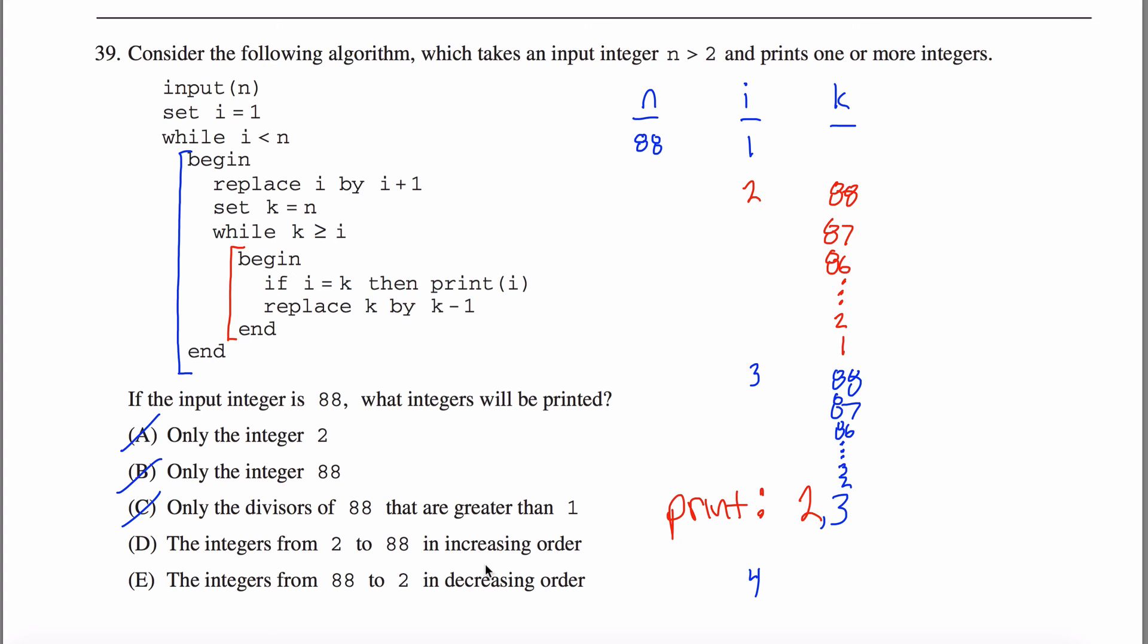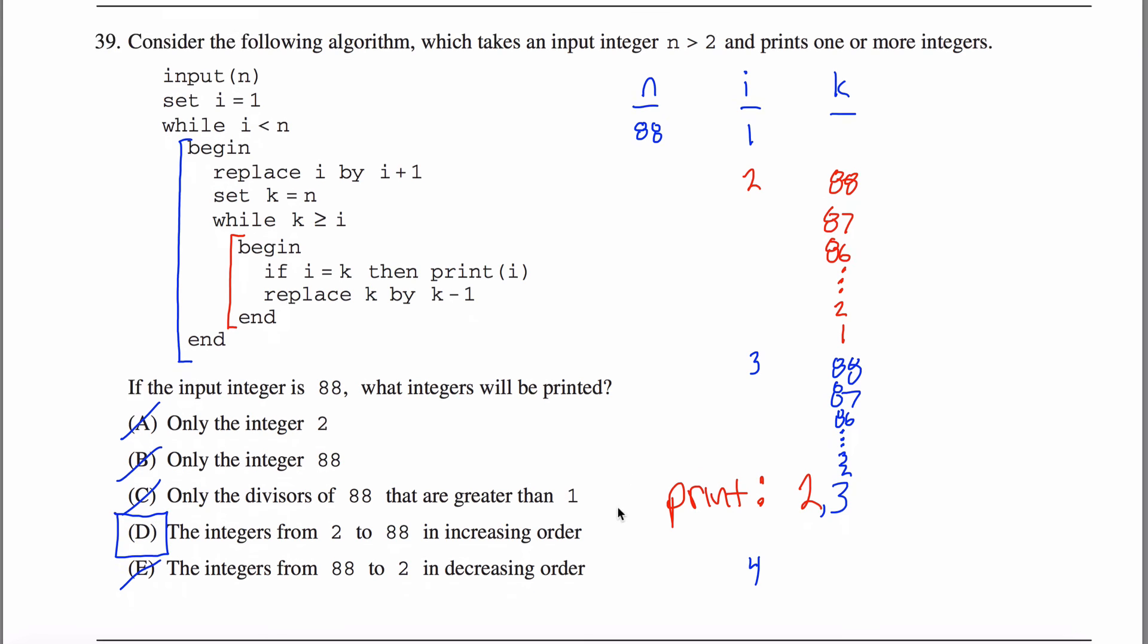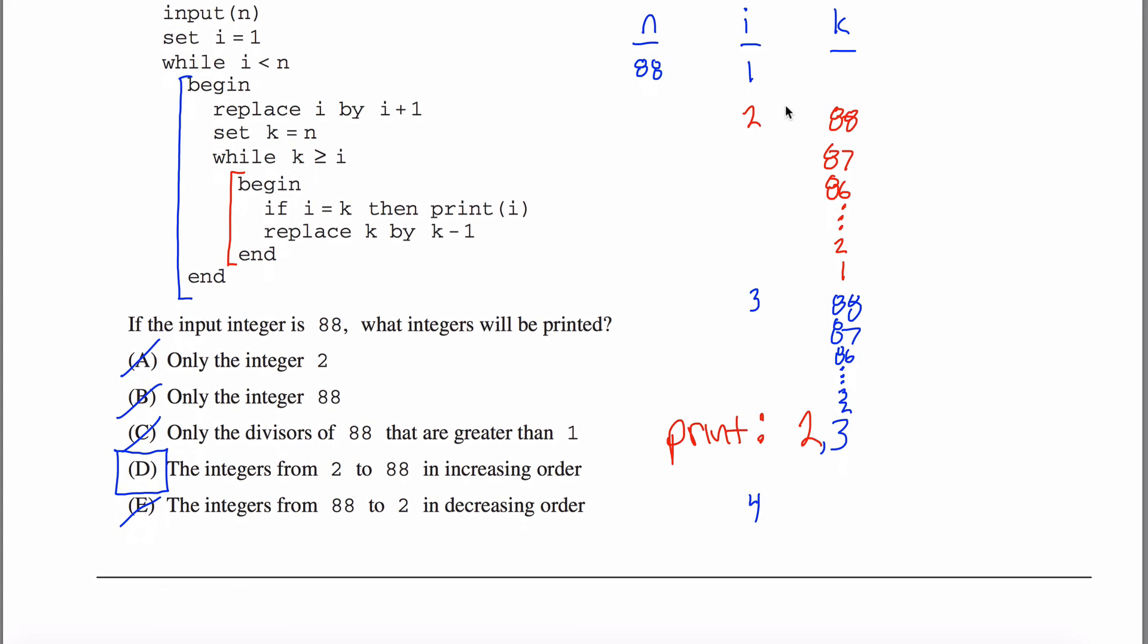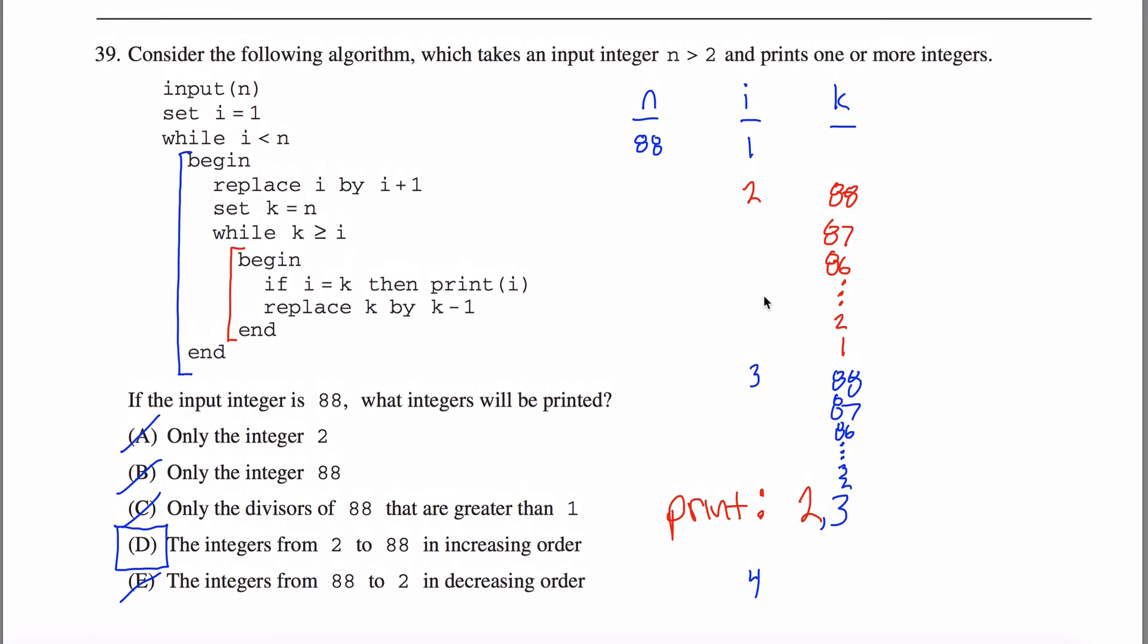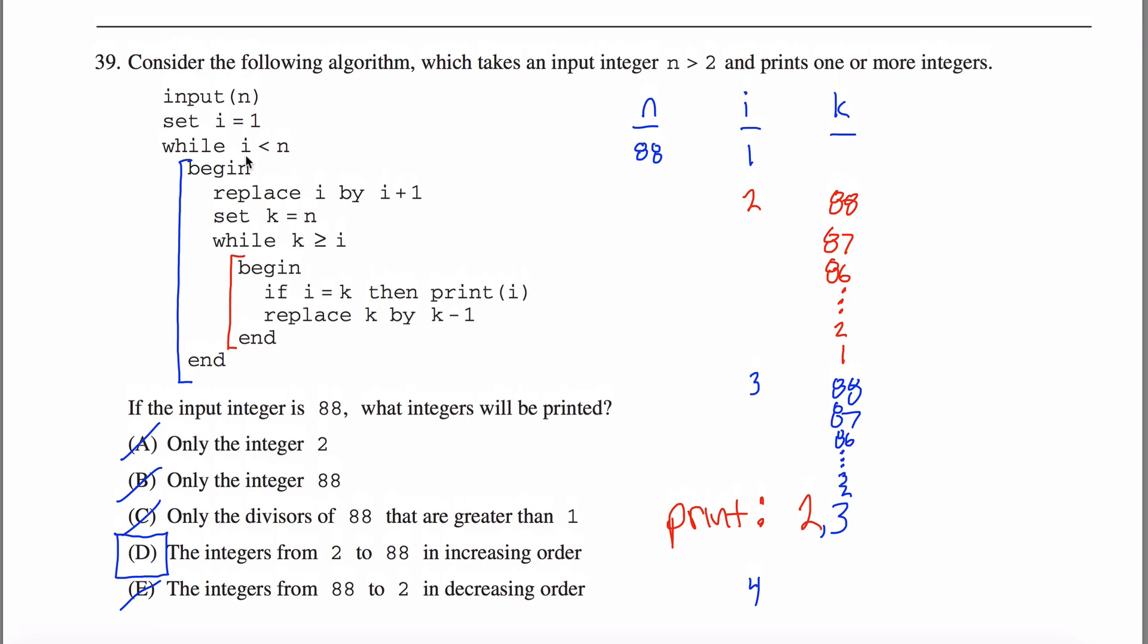The integers from 2 to 88 in increasing order. That certainly seems possible. The integers from 88 to 2 in decreasing order? Nope. The first thing I printed was a 2 and the second was a 3. By process of elimination, this must be the answer. And it's not all that surprising because you can kind of see what's happening here. This keeps increasing by 1 and then this guy goes all the way down until they're the same and it prints. So really I'm going to end up printing these guys over and over again until I finish this loop.